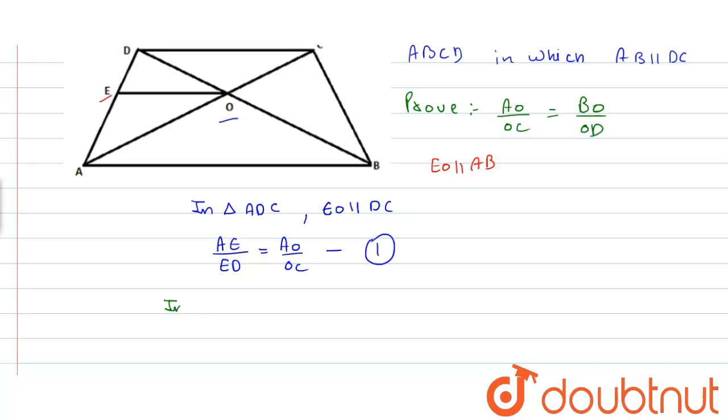And in triangle DAB, EO is parallel to AB. So by basic proportionality theorem, AE upon ED is equal to BO upon OD.